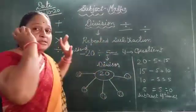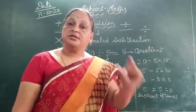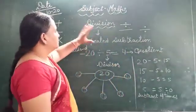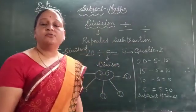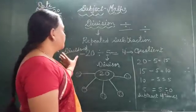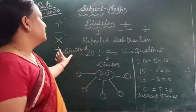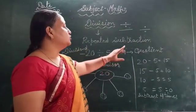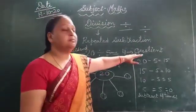Multiplication means repeated addition and division means repeated subtraction. This is how we do it — we have to read 20 divided by 5. The number we divide by is the divisor and the answer is the quotient.